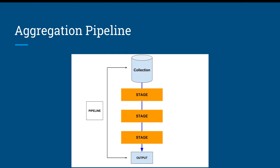The aggregation framework is based on the concept of a pipeline. The pipeline takes as input a single collection and passes the collection through one or more stages — in our case here we've got three stages. In each stage you can perform different operations. Each stage also takes as input whatever the stage before produced as output. The input and output for all stages are documents, and at the end of the pipeline we get our transformed and aggregated data.